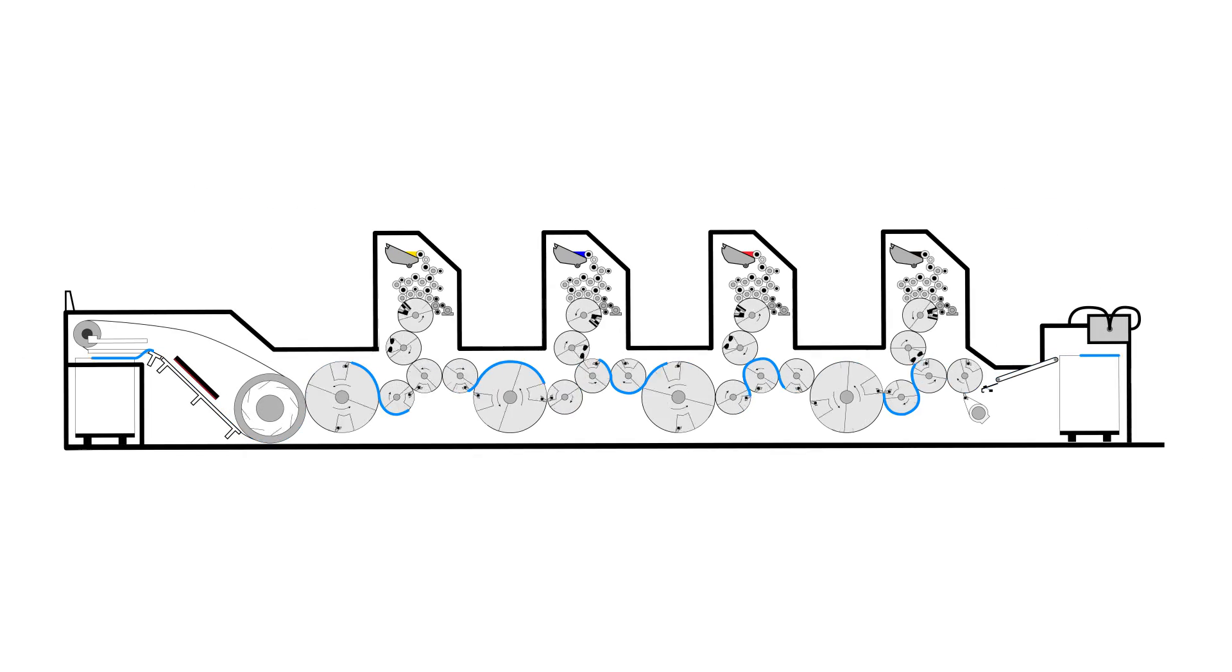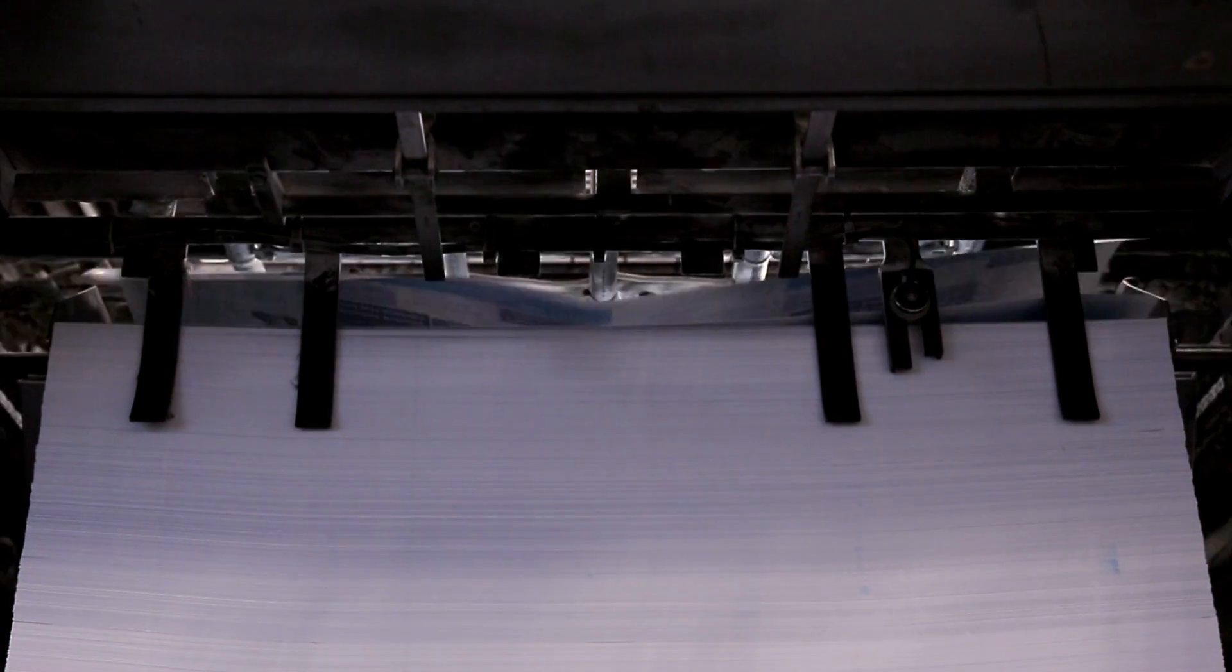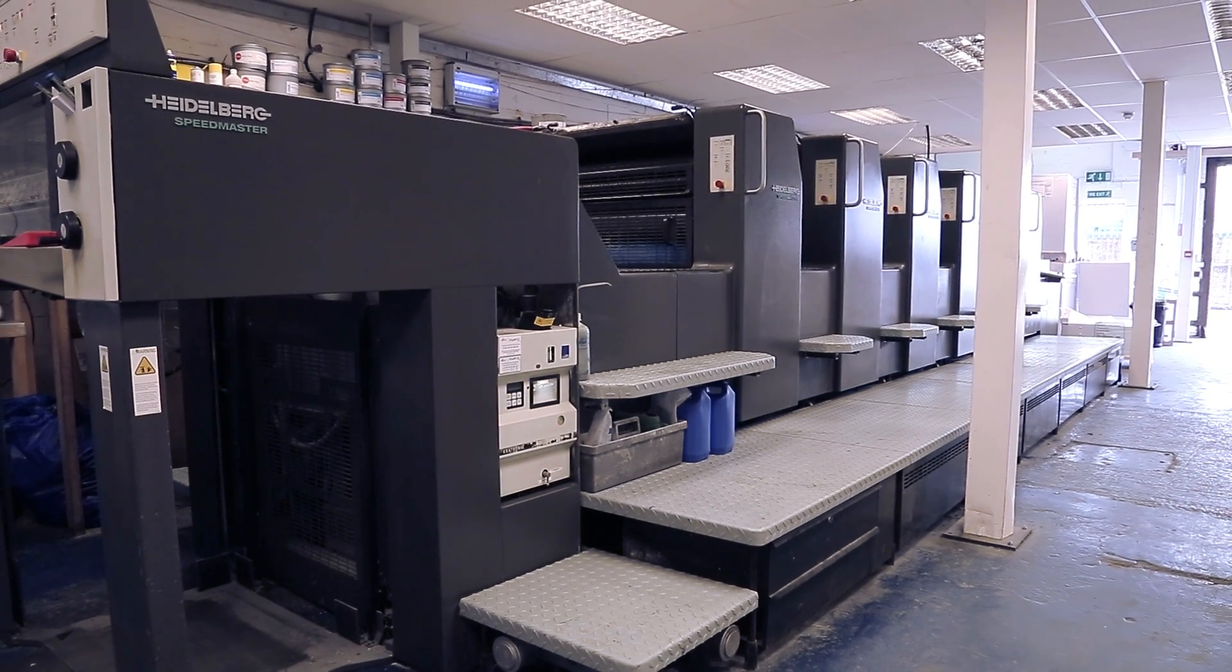Once the prints have passed through each unit, they will then be dried with hot and cool air and placed on the delivery pile. And that is the process of offset lithographic printing.